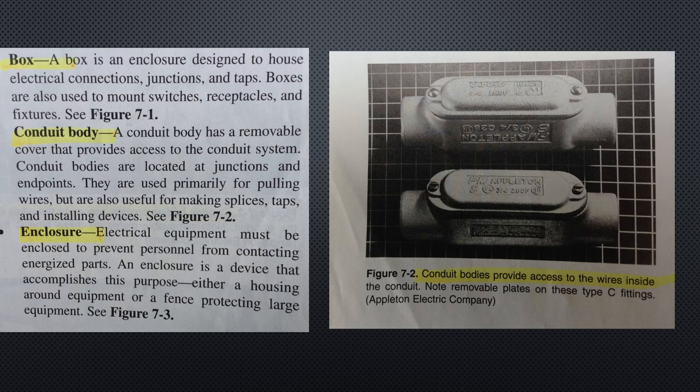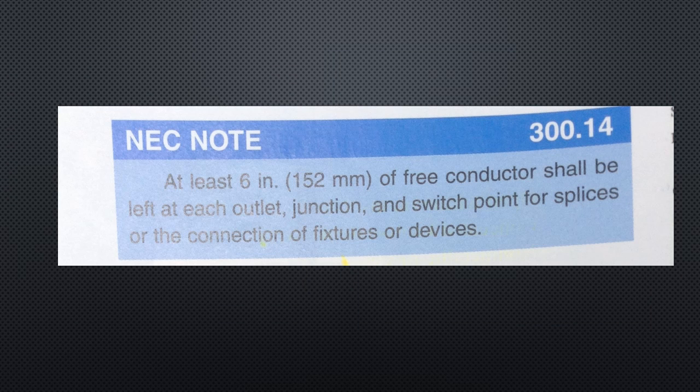NEC note: 300.14, at least 6 inches or 152 millimeters of free conductor shall be left at each outlet, junction, and also switch point for splices or the connection of fixtures or devices.